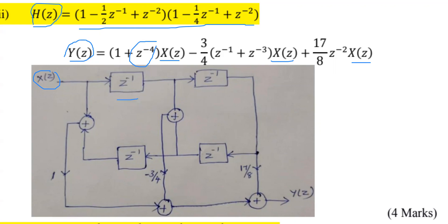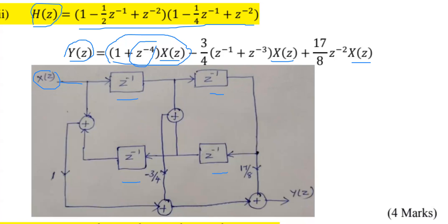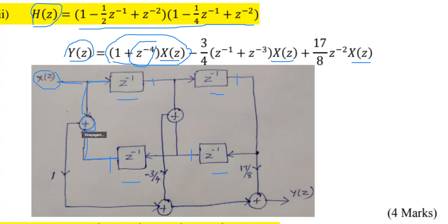We are using 4 delay elements and connecting them in such a way. So 1 plus Z power minus 4 into X of Z — this term we are going to consider. Here the coefficient is Z power minus 1, here Z power minus 2, here Z power minus 3, and here Z power minus 4.